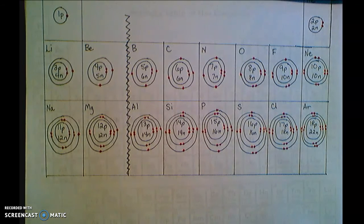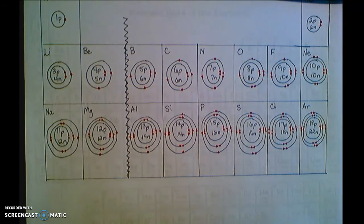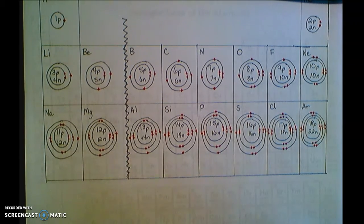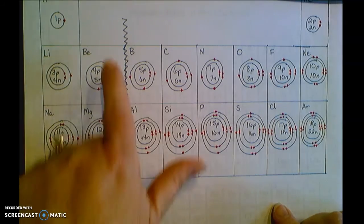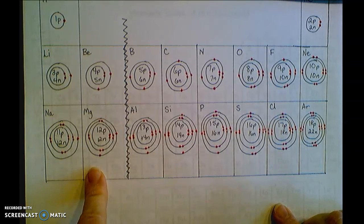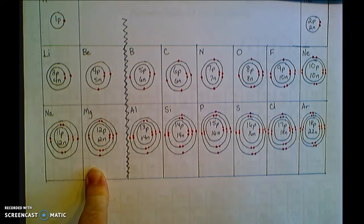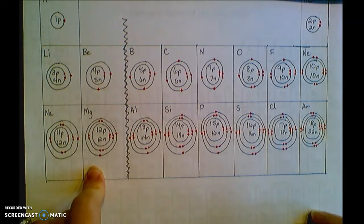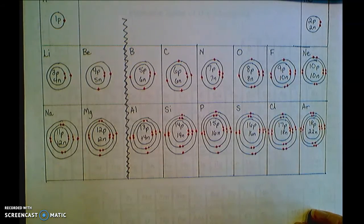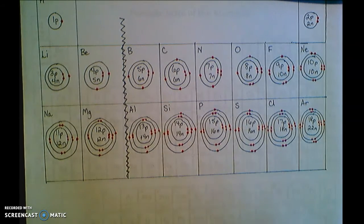Now, this pattern continues as you go through row four, five, six, all the way down the periodic table. The pattern changes a little bit. They don't fill up in exactly the same order, and we'll get to that when we talk about electron configurations. But for now, the periodic table wasn't set up to match the Bohr model, but it turns out the Bohr model matched the way the periodic table was set up. The periodic table came before the Bohr model.